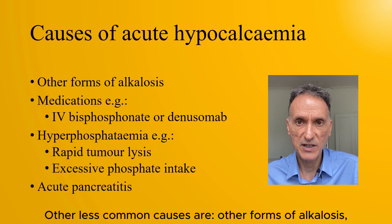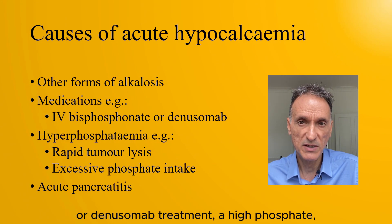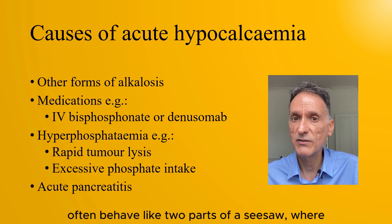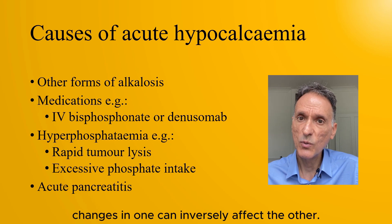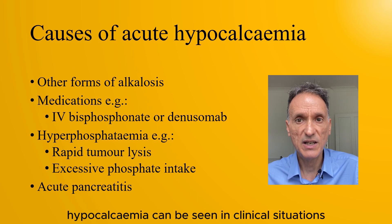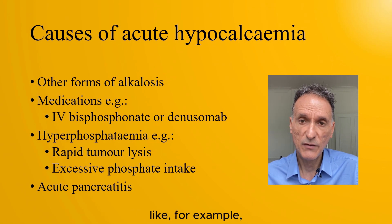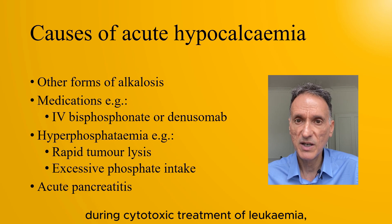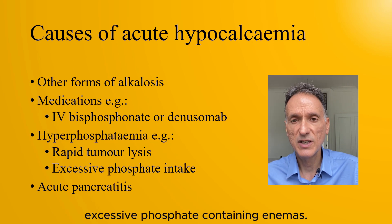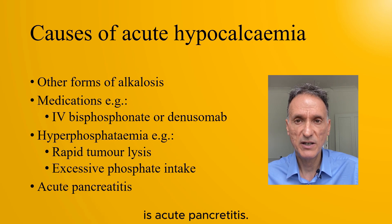Other causes of acute hypocalcemia are other forms of alkalosis, medications — for example, post-IV bisphosphonate or denosumab treatment — and high phosphate. We have to remember that phosphate and calcium often behave like two parts of a seesaw, where changes in one can inversely affect the other. Therefore, hypocalcemia can be seen in clinical situations where phosphate is high, like in rapid tumour lysis, for example during cytotoxic treatment of leukaemia, or in excessive phosphate intake, like excessive phosphate-containing enemas. Another less common cause is acute pancreatitis.